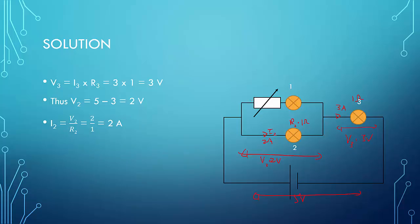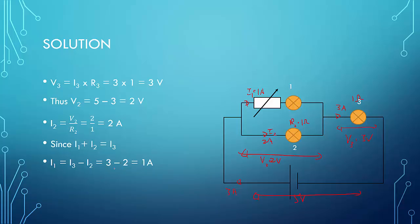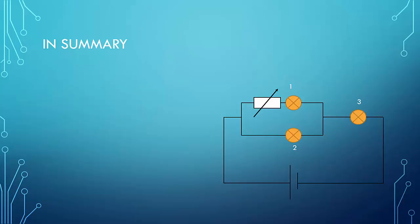Now the last step is to find the current flowing through light bulb 1. We know the current coming out of the battery is 3 amperes, and 2 amperes flow through bulb 2, so by Kirchhoff's current law, I2 plus I1 equals I3. Subtracting, 3 minus 2 equals 1. So in summary: I1 is 1 ampere, I2 is 2 amperes, and I3 is 3 amperes.